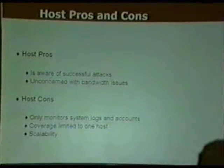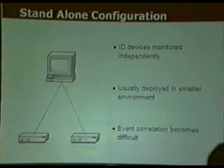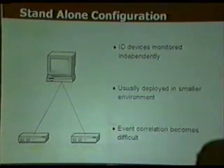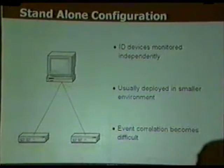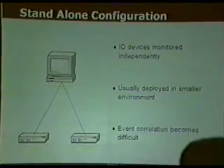There are four architecture variations. The first is standalone, where you individually log into each monitor to extract its contents. This is typically seen in very small environments without budget. In this type of environment, event correlation becomes extremely difficult because there's no centralized data repository.